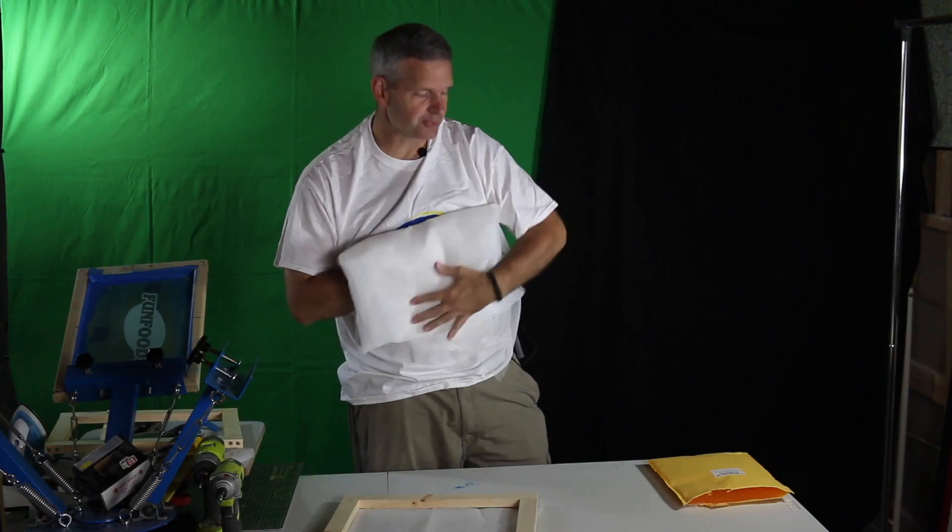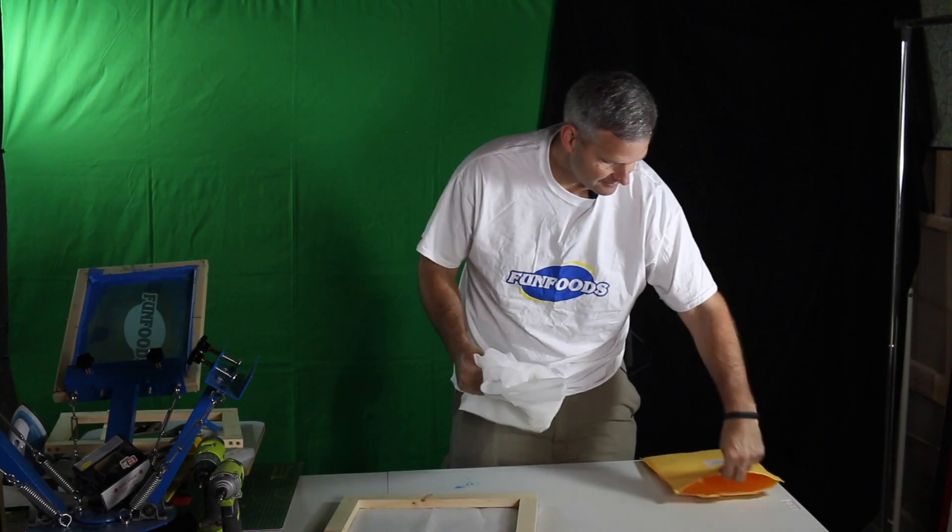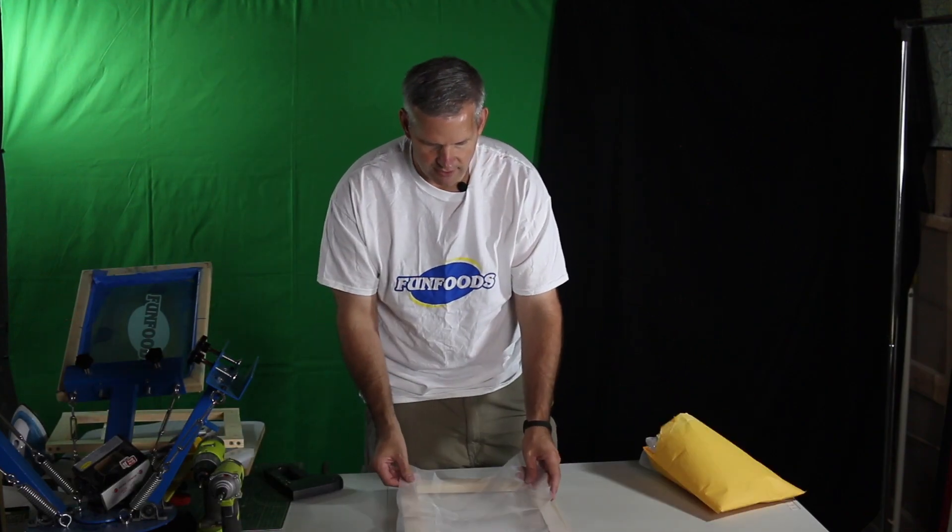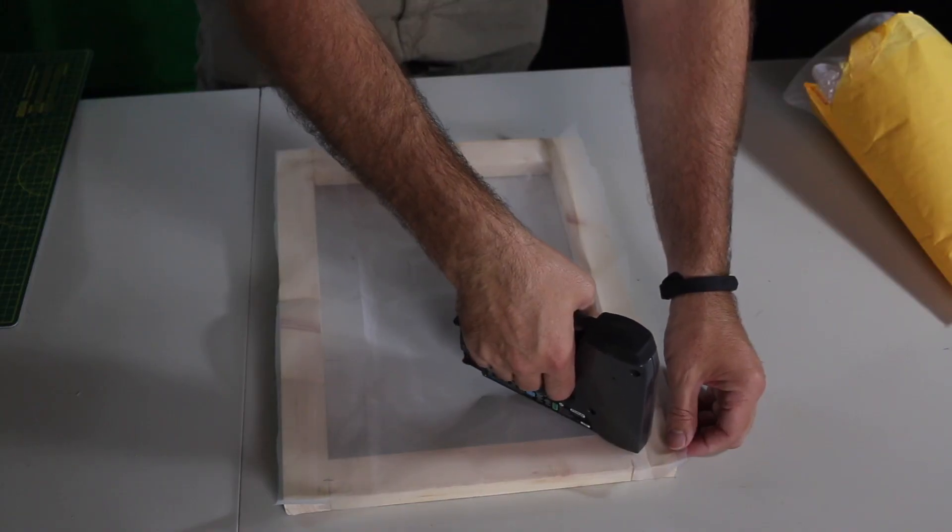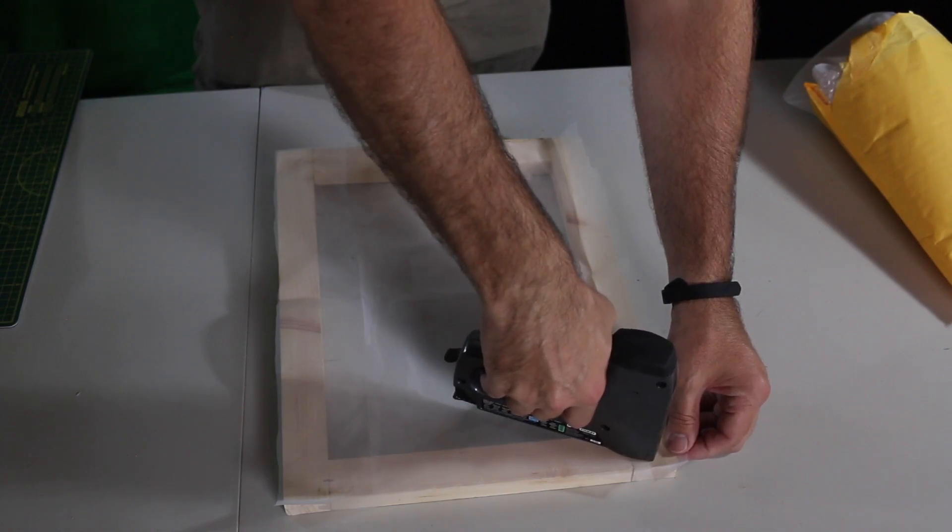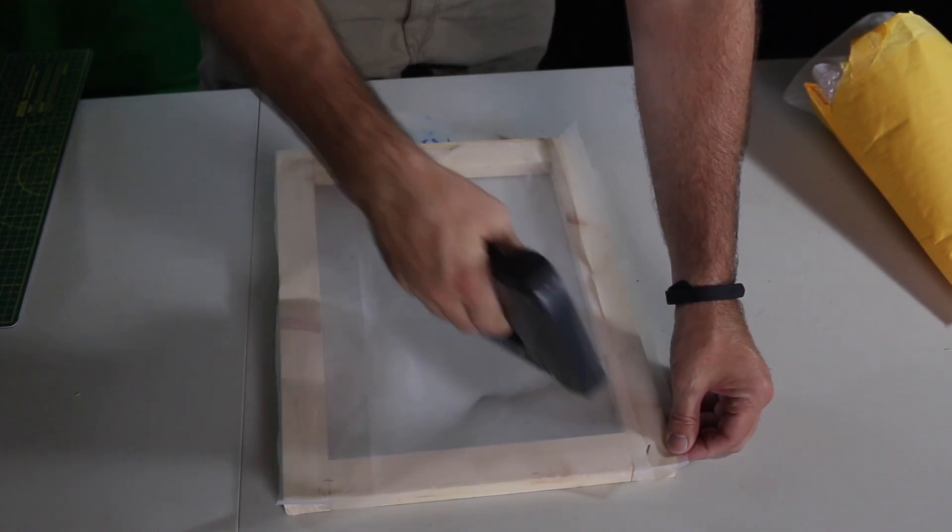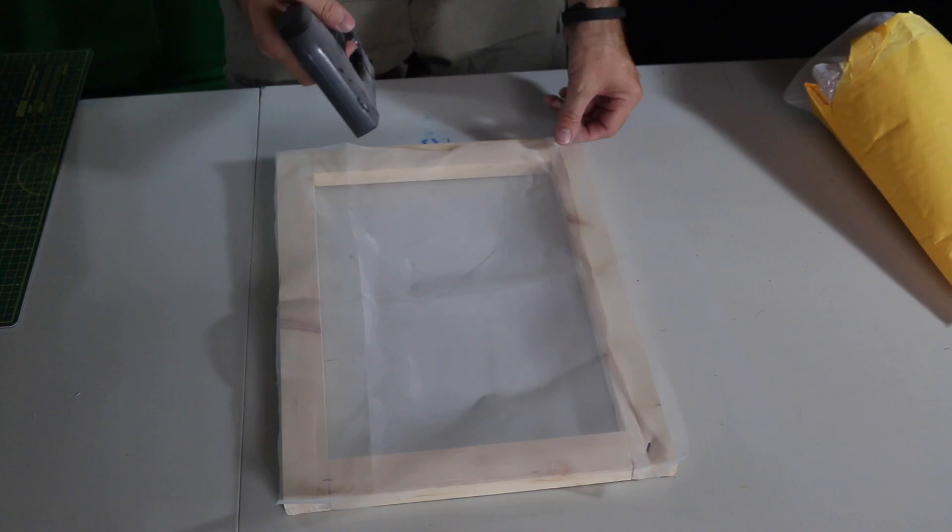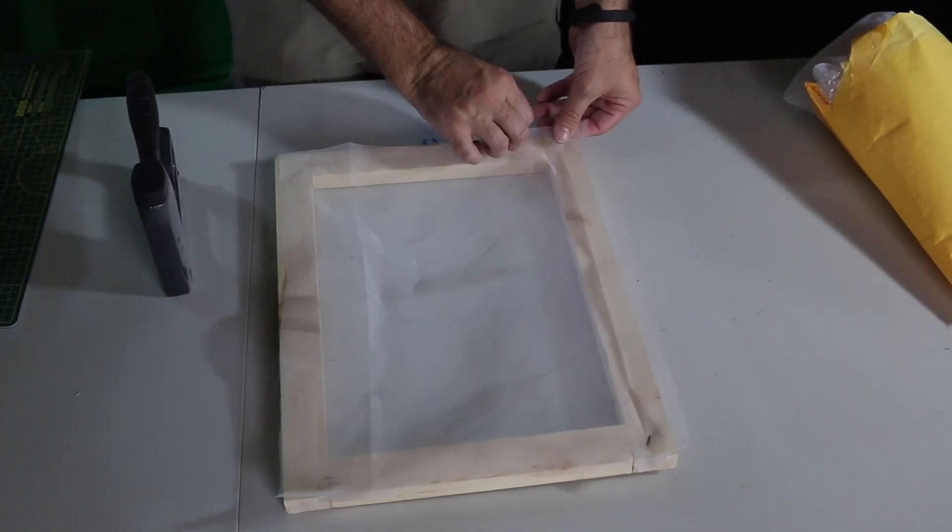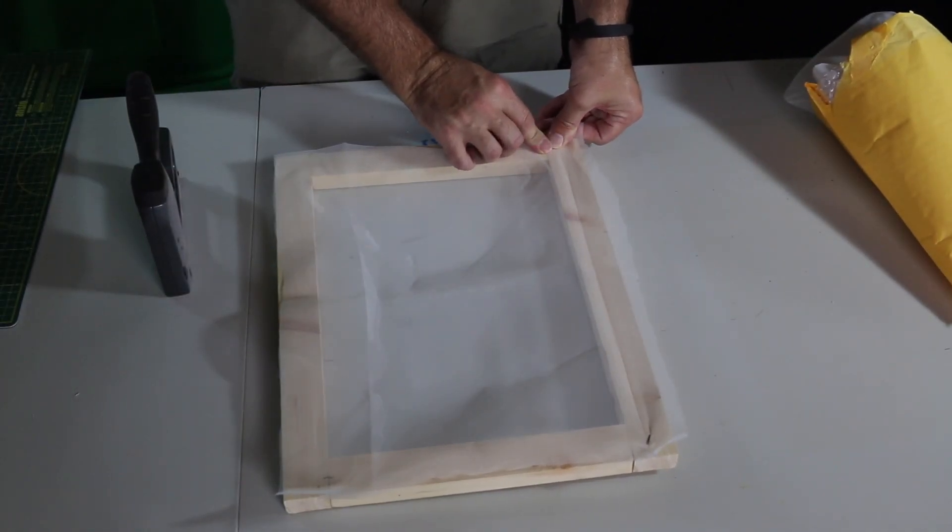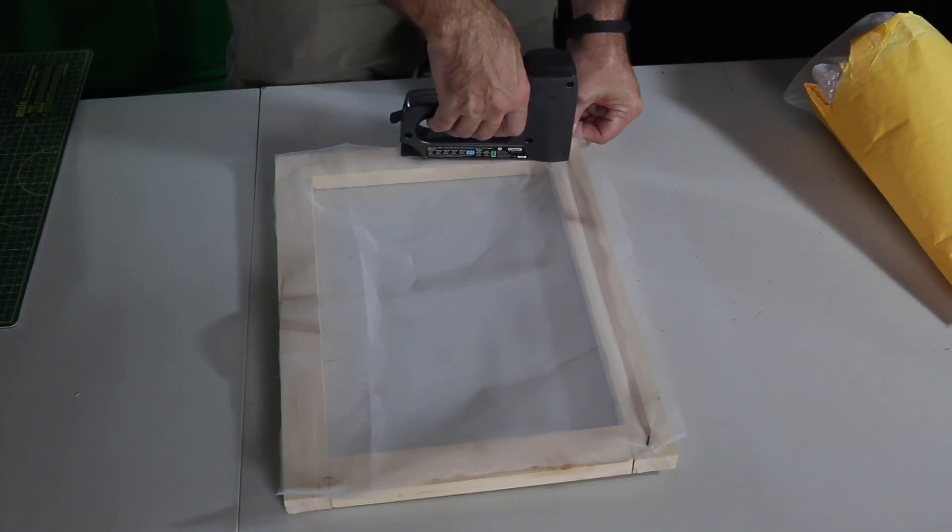Put the rest away so it doesn't get messed up. Now just take a staple gun and we want to start on the top and put a staple in and then we want to pull it snugly towards the bottom and put another staple at the bottom just to kind of hold it in place.